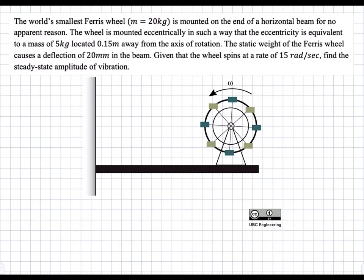In this problem there's a ferris wheel attached at the end of a beam, and this ferris wheel has an eccentric mass that rotates, which essentially generates a force that is not constant in time. It varies sinusoidally with time because the ferris wheel is rotating with a constant angular velocity of 15 radians per second. So essentially what we're asked to find is the steady state's maximum amplitude of vibration.